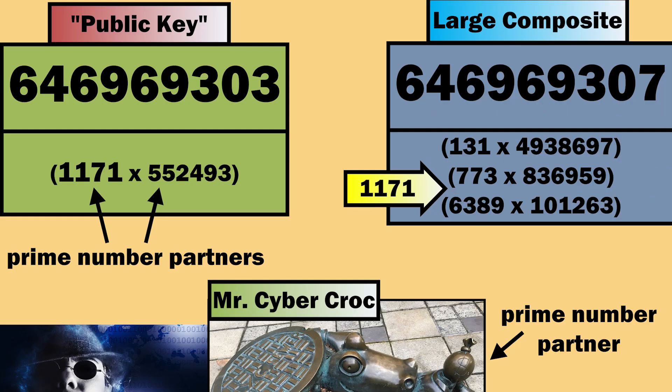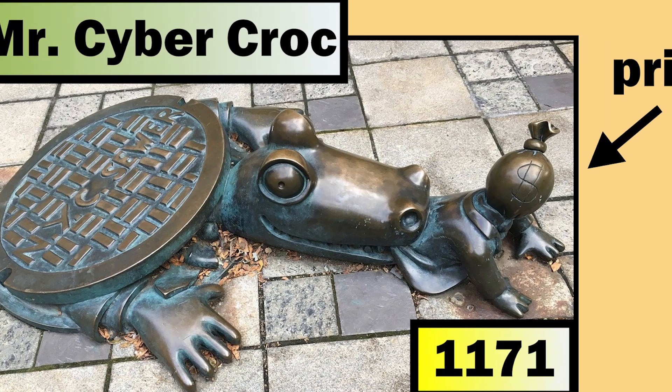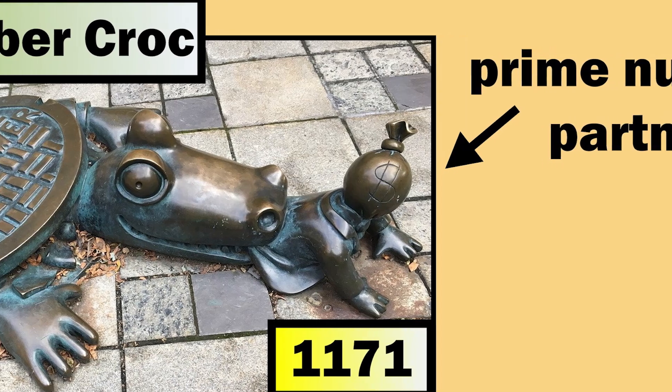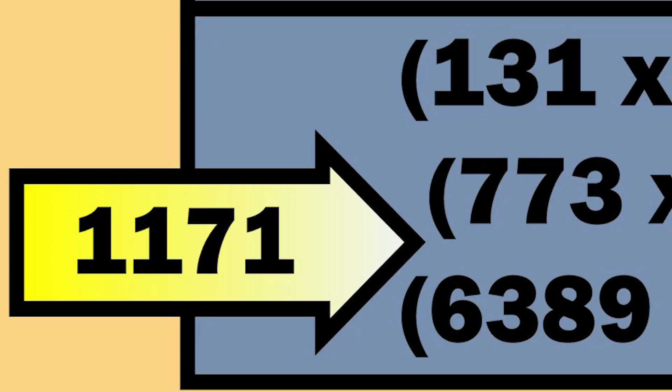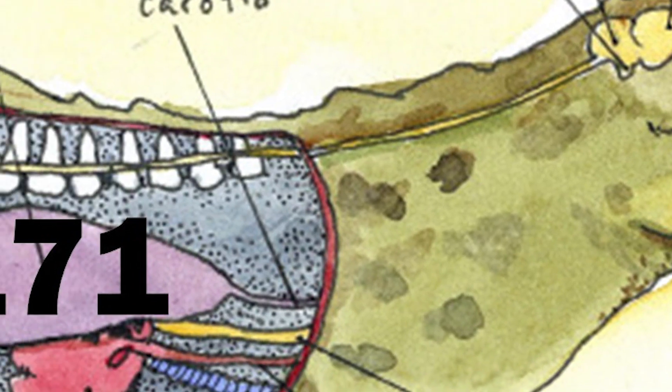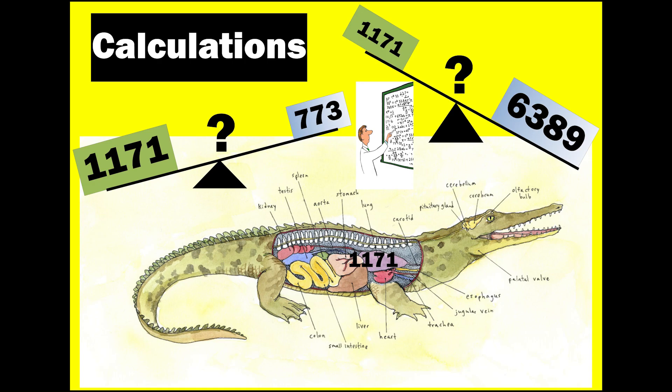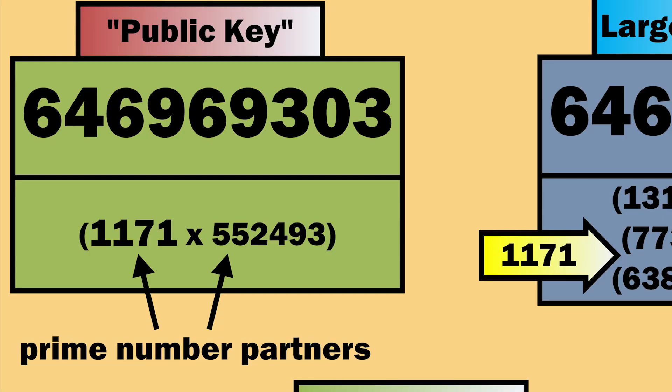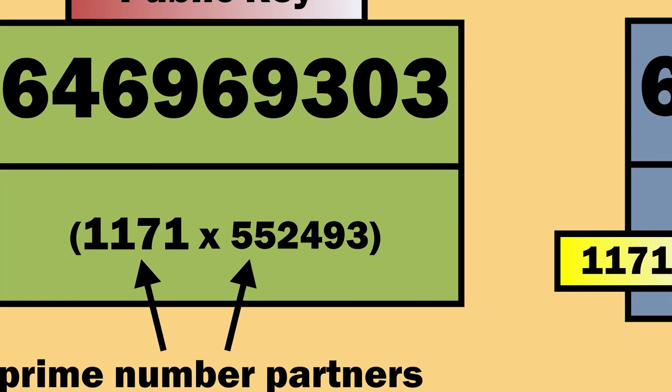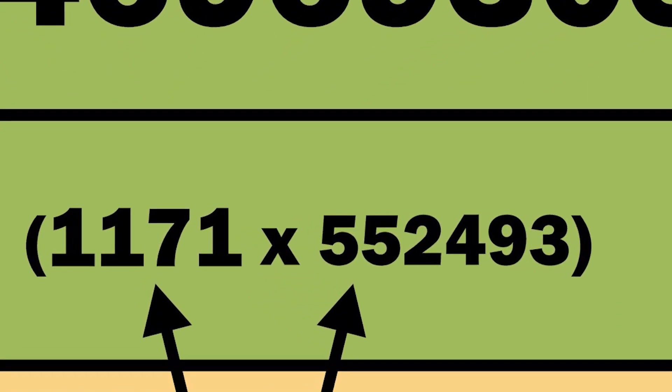It wasn't long before Mr. Cyber Croc discovered prime number partner 1171 between 773 and 6389. Mr. Cyber Croc devoured 1171. His belly did the calculations and out popped the public key: 1171 times 552493.